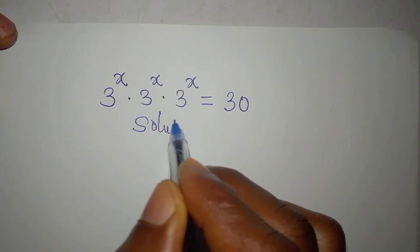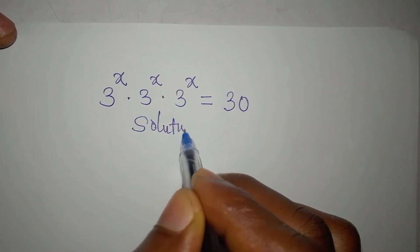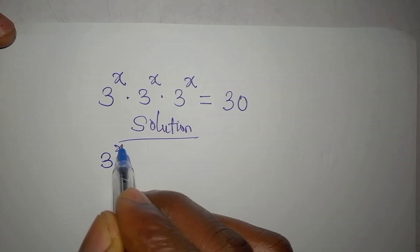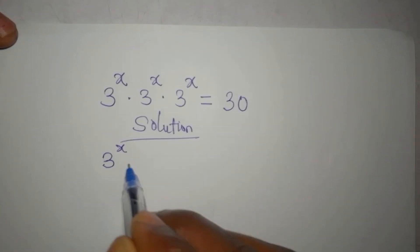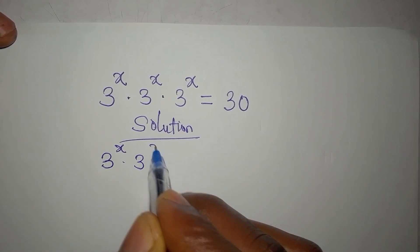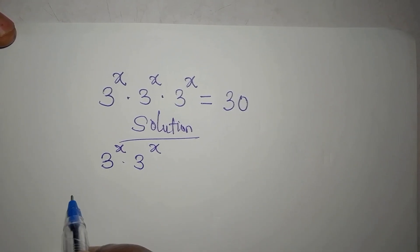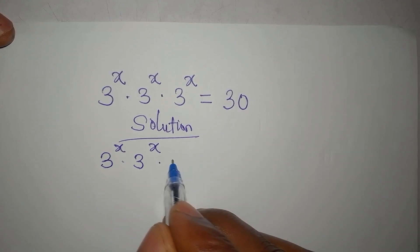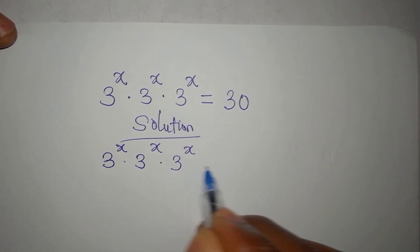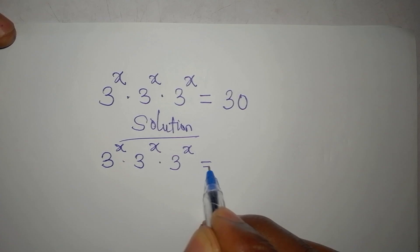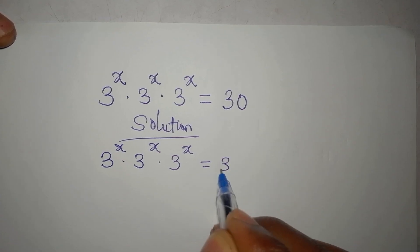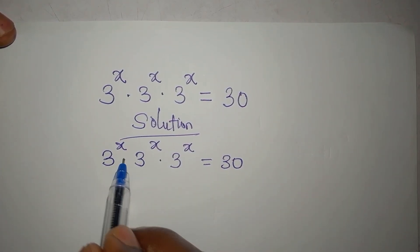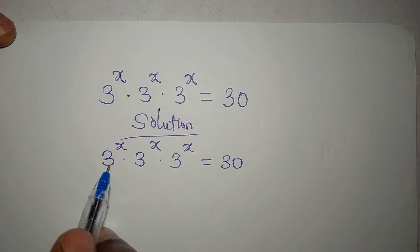Let's work on this: 3 to the power of x multiplied by 3 to the power of x multiplied by 3 to the power of x equals 30. There is something you must understand from here.